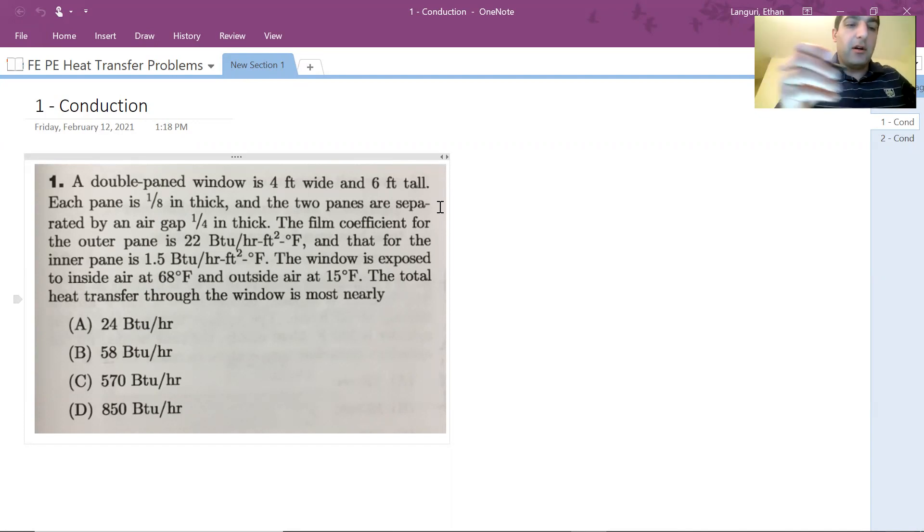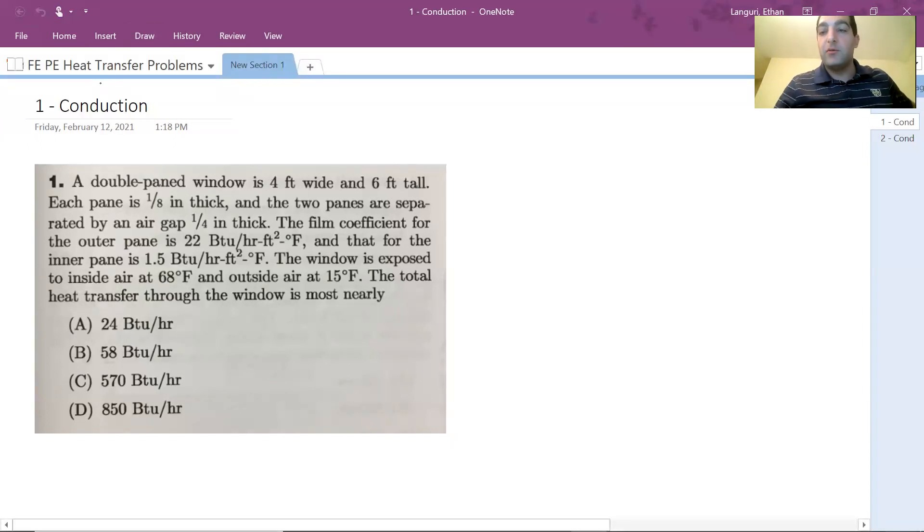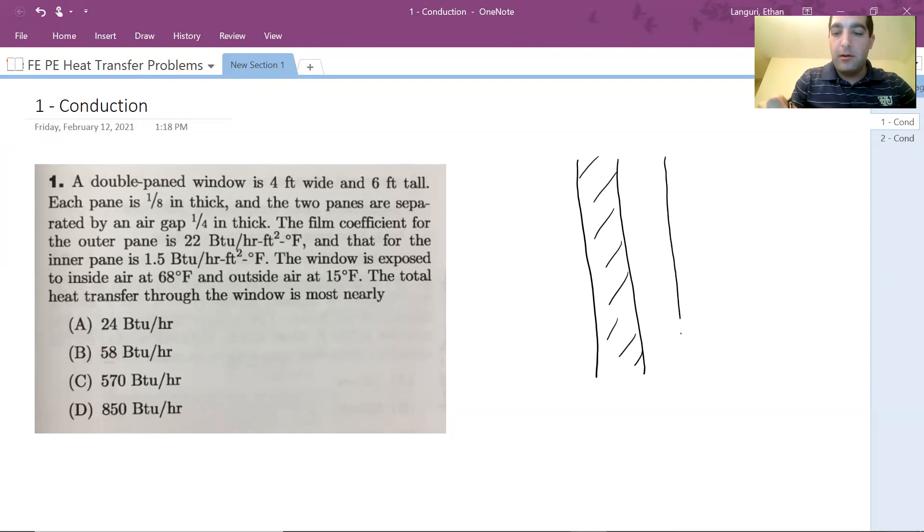I'm going to start putting together a quick schematic drawing, which helps me solve this better. I have a layer of window, an air gap in between, and another layer. So this is the air gap. This is my 2D view. If I'm going to show it in 3D, this is what it looks like.